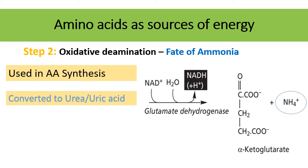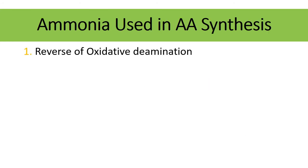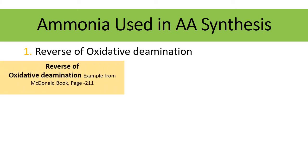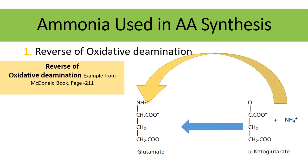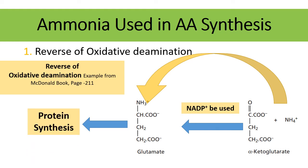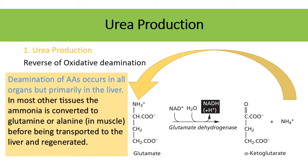Urea is produced in most mammals, while uric acid is produced in poultry and avian species. In the reverse of oxidative deamination, ammonia and alpha-ketoglutarate become substrates, producing glutamate — but instead of NADH, NADP is required. This glutamate is then used for protein synthesis in the body.